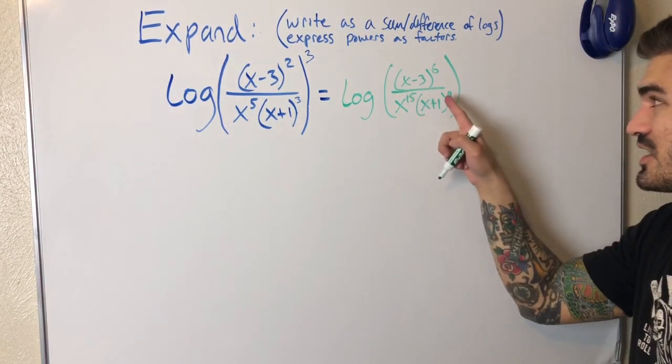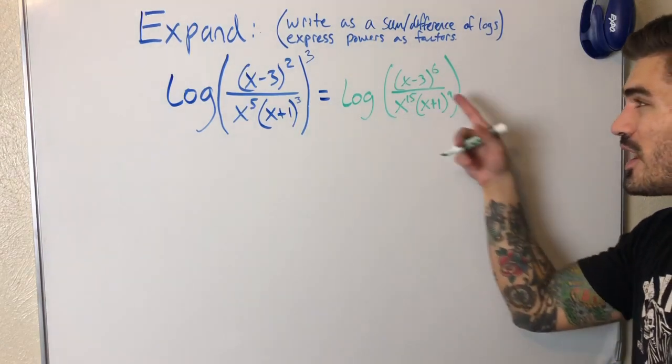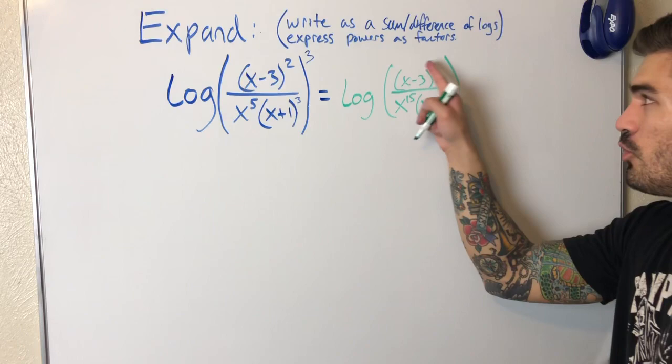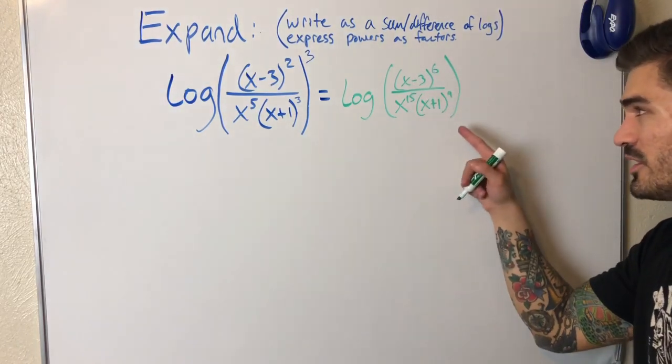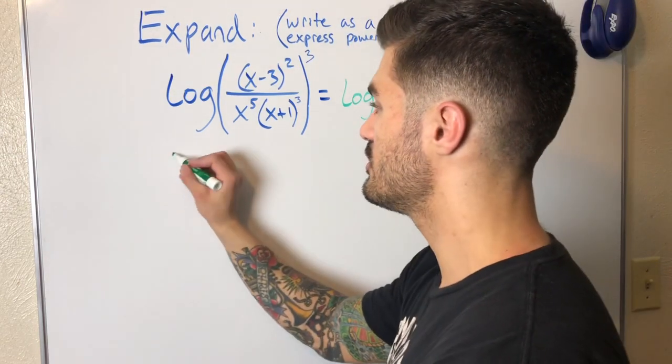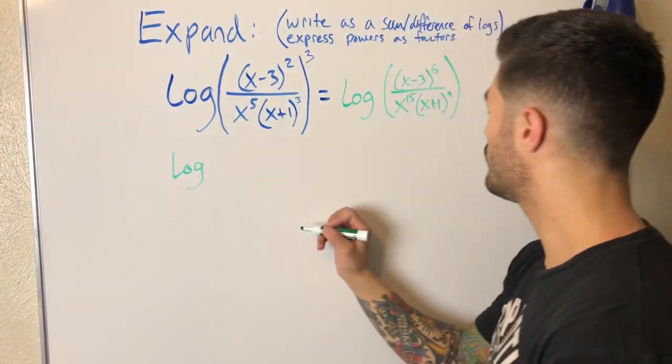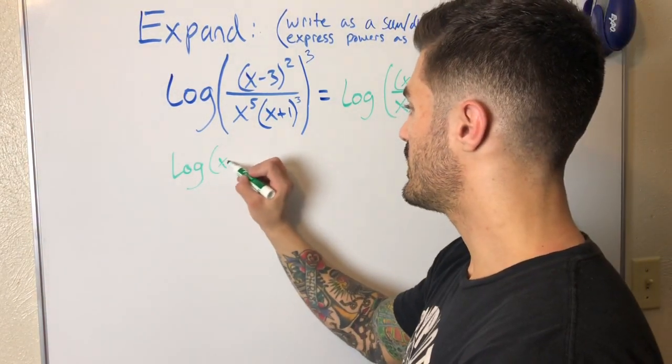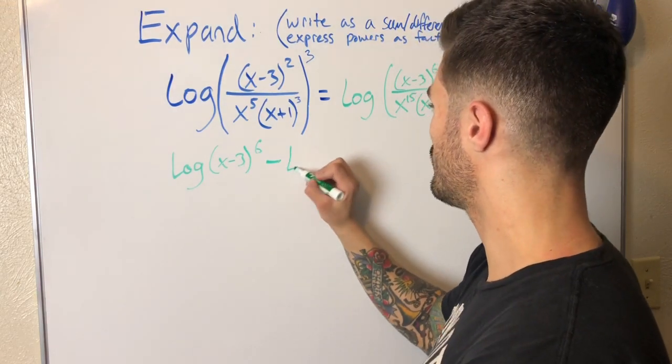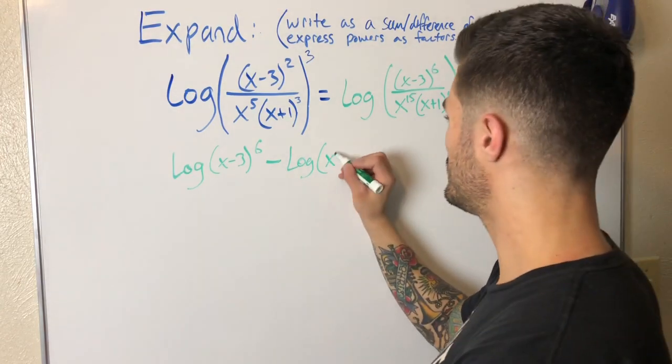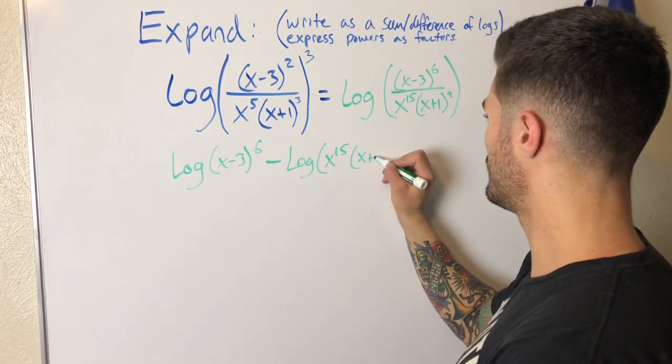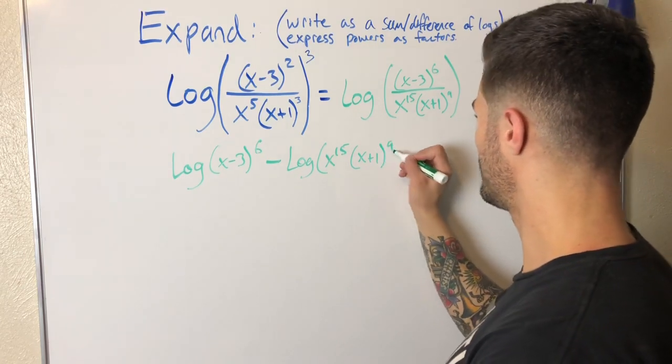So now I can start splitting stuff up. And the thing is, I got this divided by this, so I have to do that division first. I don't want to reach in here and start splitting stuff up. This whole thing is being divided by this whole denominator, right? So I need to do the division first so I can split it up as subtraction. I'm going to go ahead and come over here and do this. So log x minus three to the sixth minus log, what, x to the fifteenth, x plus one to the ninth.